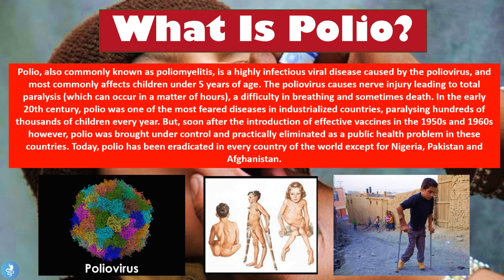So to summarize, polio is a viral disease caused by the poliovirus, most commonly affecting children under five years of age. It was a serious public health crisis in the early 20th century, causing severe nerve injury, total paralysis, breathing difficulties, and sometimes death. The good news is that polio is practically eradicated from the entire globe except for Nigeria, Pakistan, and Afghanistan. Now let's take a closer look at how one can contract the disease.